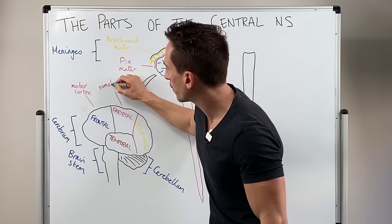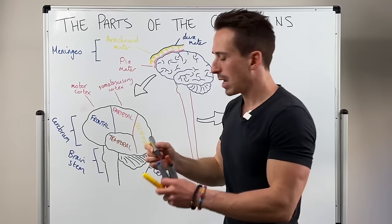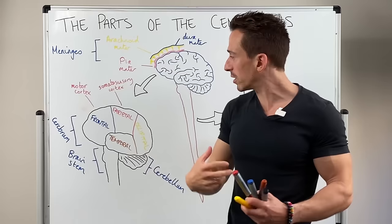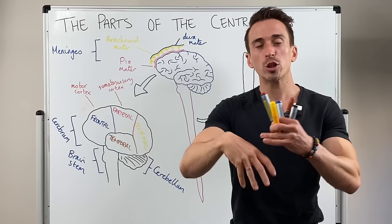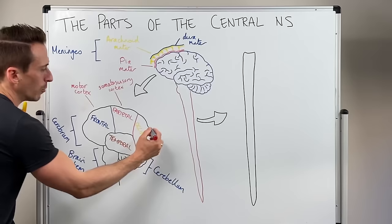The parietal lobe is the location of what we call the somatosensory cortex. So somato means body, sensory is picking up sensation. So anytime you become consciously aware of sensation, whether it be touch, pressure, pain, whatever it may be. It must go to the parietal lobe in order for you to understand it and make sense of it.